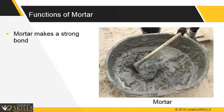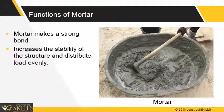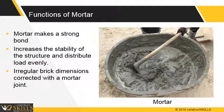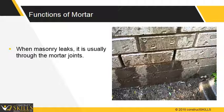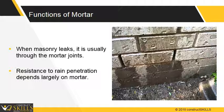Mortar makes a strong bond, which in turn increases the stability of the structure and distributes the loads evenly. Also, irregular brick dimensions can be corrected with a good mortar joint. When masonry leaks, it is usually through the mortar joints. Resistance to rain penetration depends largely on the strength of the bond between the masonry unit and the mortar.